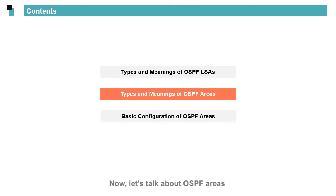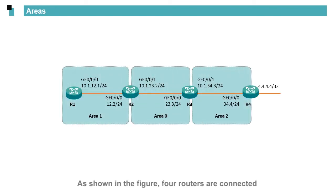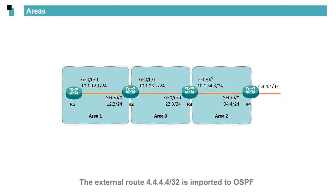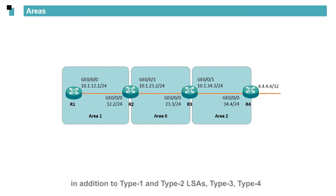Let's talk about OSPF areas. As shown in the figure, four routers are connected with three areas — Area 0, Area 1, and Area 2 — planned. The external route 4.4.4.4/32 is imported to OSPF. If Area 1 is a common area, in addition to Type 1 and Type 2 LSAs, Type 3, Type 4, and Type 5 LSAs exist in Area 1.